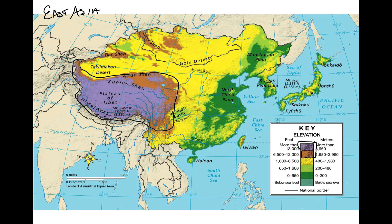The highest points in East Asia — we should all know Mount Everest — and then also over here in Japan is Mount Fuji. Mountains: not a lot can grow there, it's really inhabitable. If we can think back to our population density map, not a lot of people live there — just not really a great place to live.